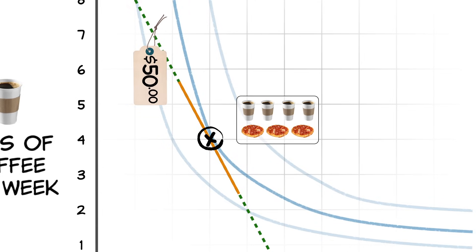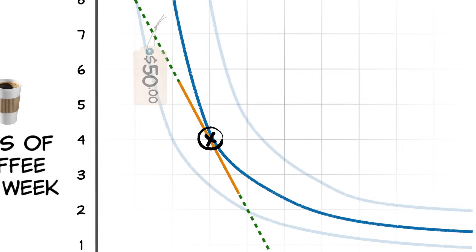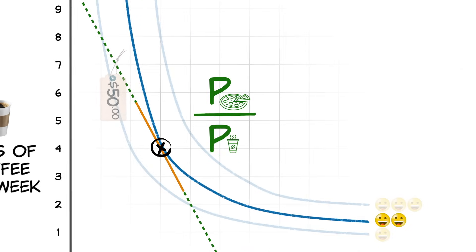The point of tangency between the budget constraint and the indifference curve also means that at your optimal consumption combination, the market's relative price of the goods equals your willingness to substitute between them — and that's your marginal rate of substitution. Another way to see this is to recognize that at your best choice, the marginal utility per dollar of both goods is the same.